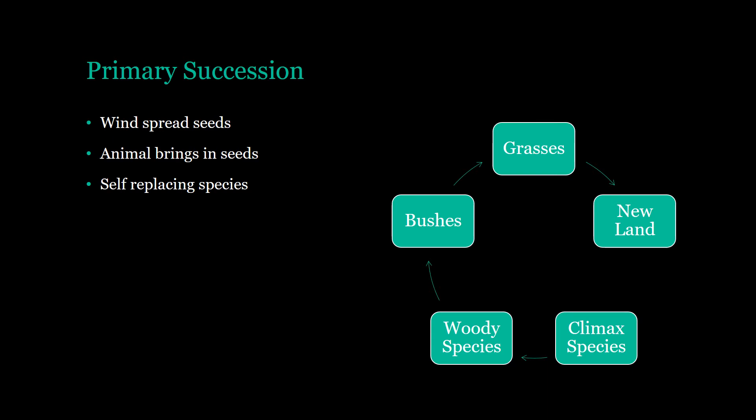Eventually the species will be self-replacing, which is called a climax species. The process begins with new land, and the first to place their flag are grasses. Once a few of them die off, shrubs or bushes enter the ecosystem. Then woody species like trees come in, and eventually a few species are self-replacing — this takes many years to reach the climax species.